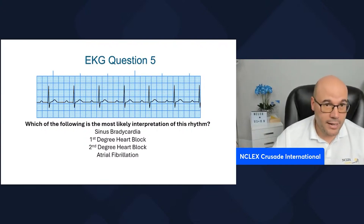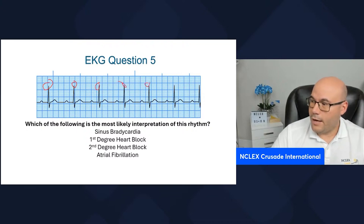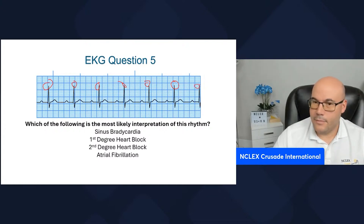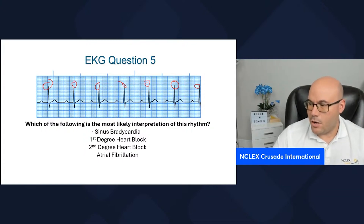Is the heart rate less than 60? One, two, three, four, five, six, seven. The heart rate is close to 70. So this is not sinus bradycardia.